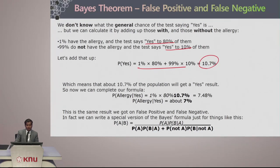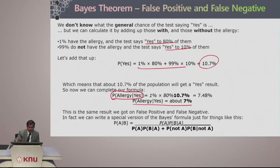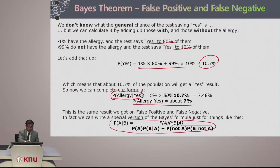With 10.7 percent yes results, we can calculate that 1 percent of the population will get yes results accurately. So the probability of a person actually being allergic given a positive result is approximately 7.48 percent. This is the same result we see for false positive and false negative analysis. You can use the Bayes formula in this aspect to check false positives and false negatives.